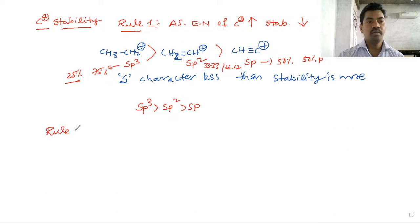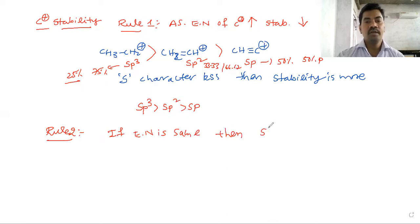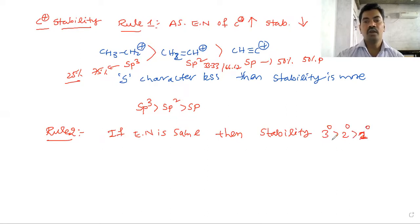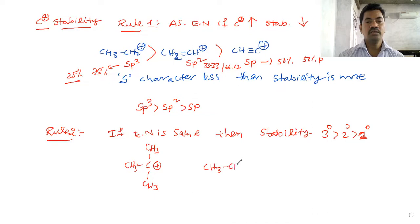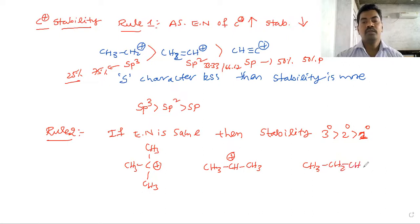Rule 2: if electronegativity is the same, then to determine which carbocation is more stable, we compare degree of substitution. For example: tertiary carbocation — CH3 three times attached to C+; secondary carbocation — CH3 and CH2 attached to C+.